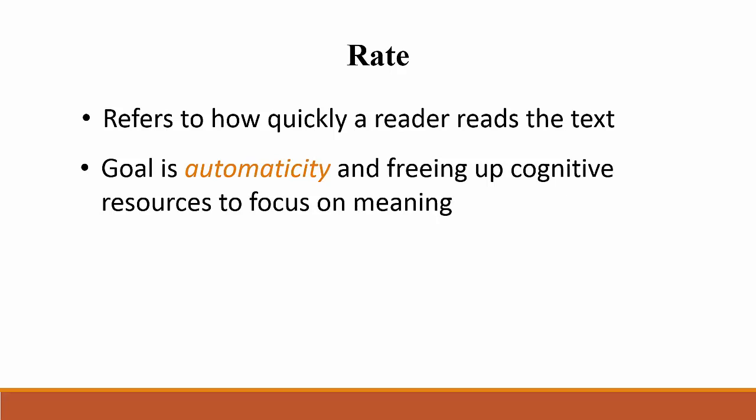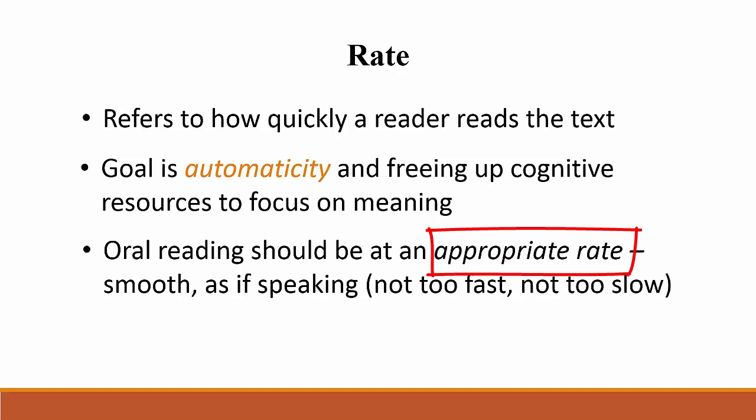If words and the common sound-symbol relationships are not learned to the level of automaticity, the reader will need to use strategies to decode the word, which will slow down the reading and distract from comprehension. However, if the words can be recognized quickly, cognitive effort can be focused on connecting the words to larger units of meaning like phrases, sentences, or paragraphs. We use the term appropriate rate in the definition because it's possible to read something too quickly as well as too slowly. Someone who reads connected text like it's a race likely isn't paying attention to the meaning. Appropriate rate refers to reading the text smoothly, like you were saying it to someone else instead of reading it.